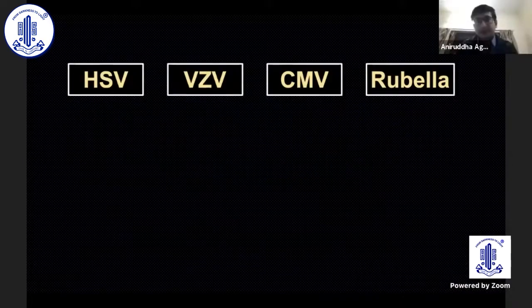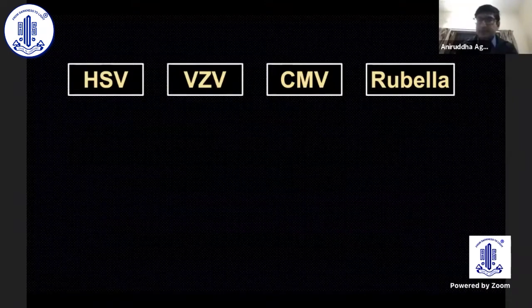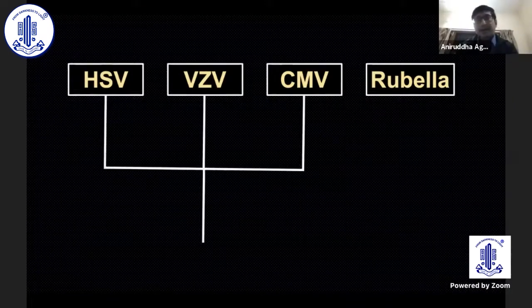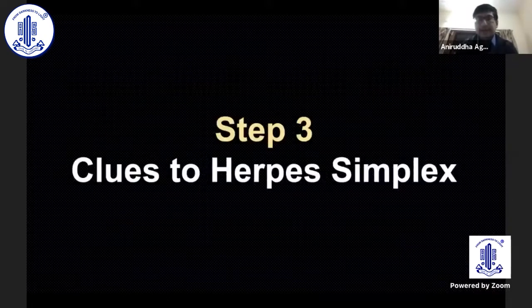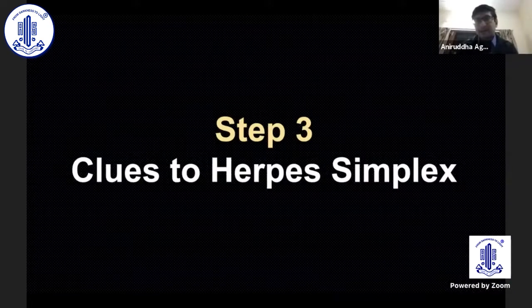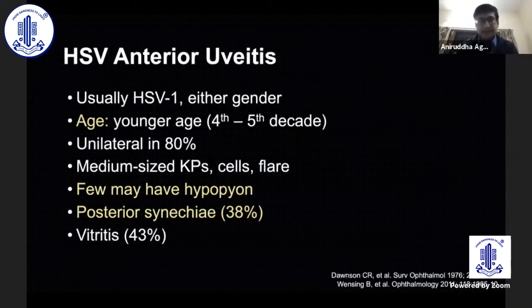Coming to the most important etiologies — HSV, VZV, CMV, and rubella — we will discuss the top three as these are the most common in our clinic. The most important step is to identify which type of herpes virus we're dealing with: whether it's herpes simplex, varicella zoster, or cytomegalovirus.